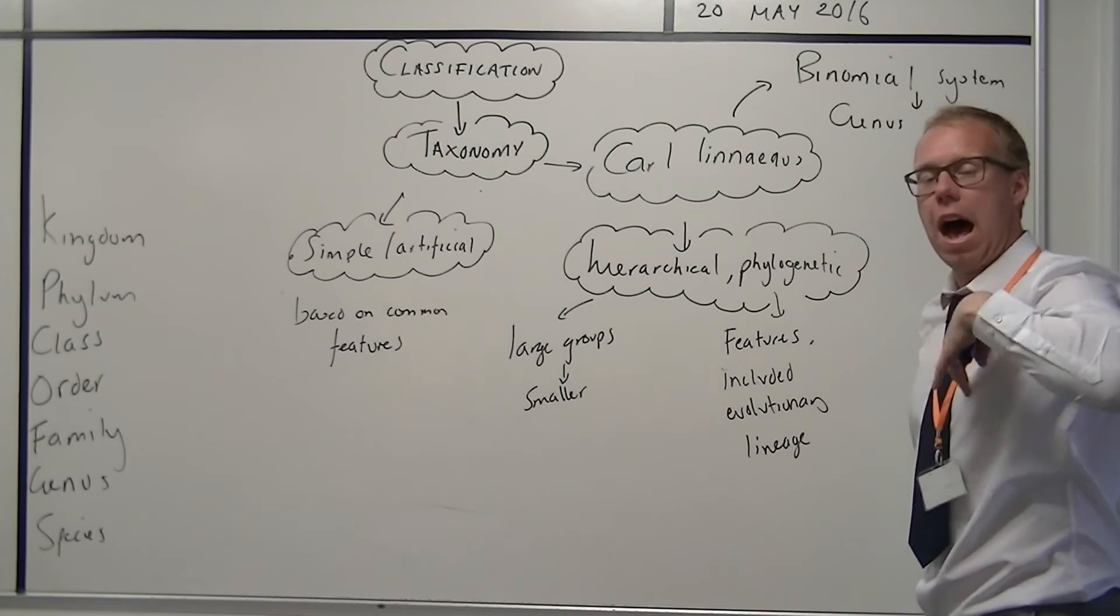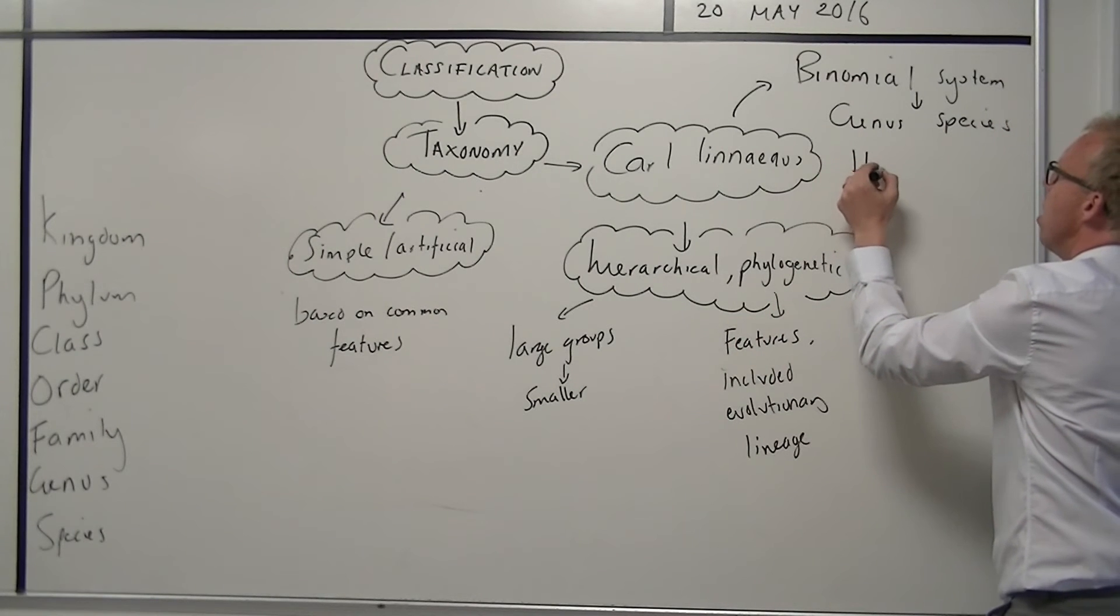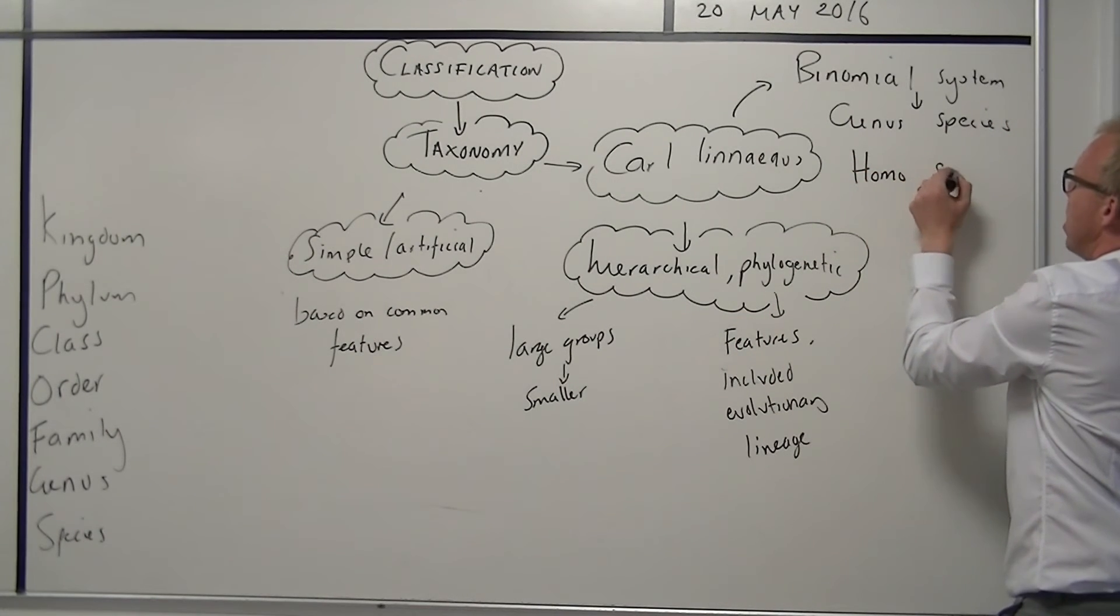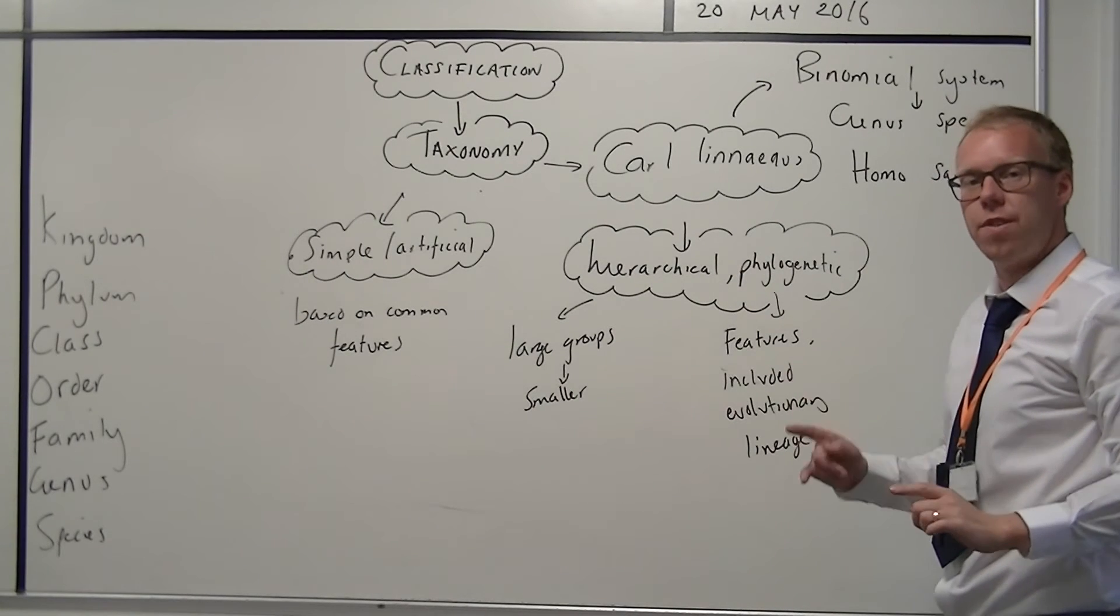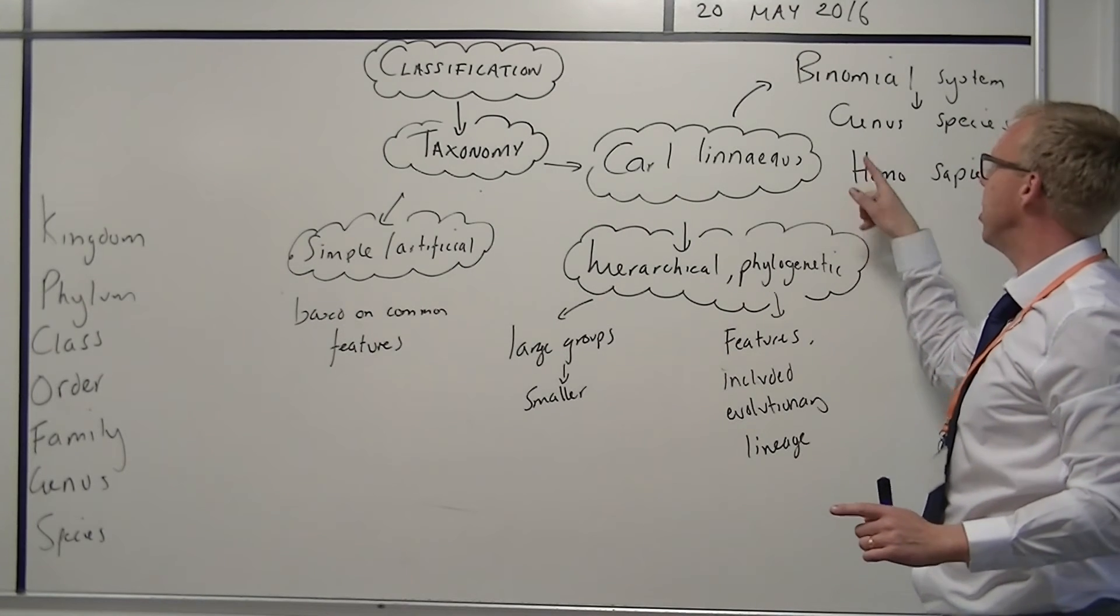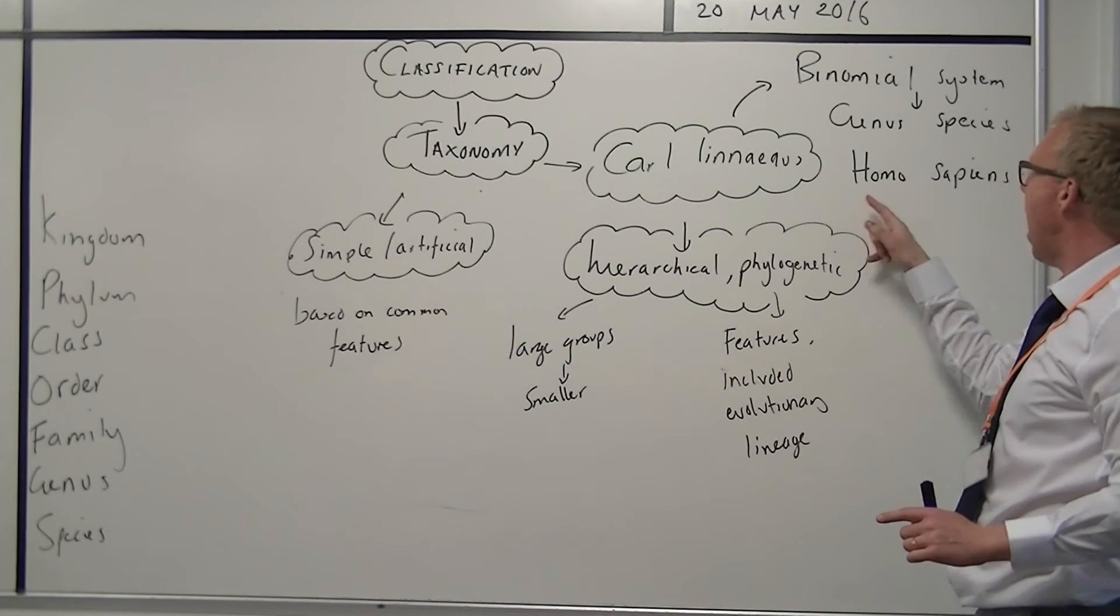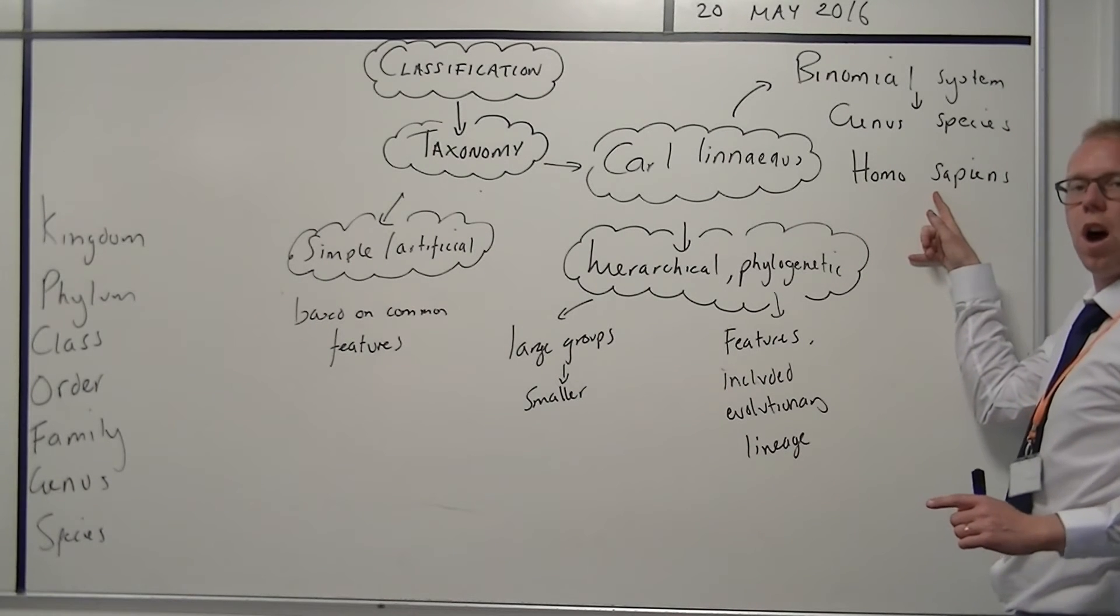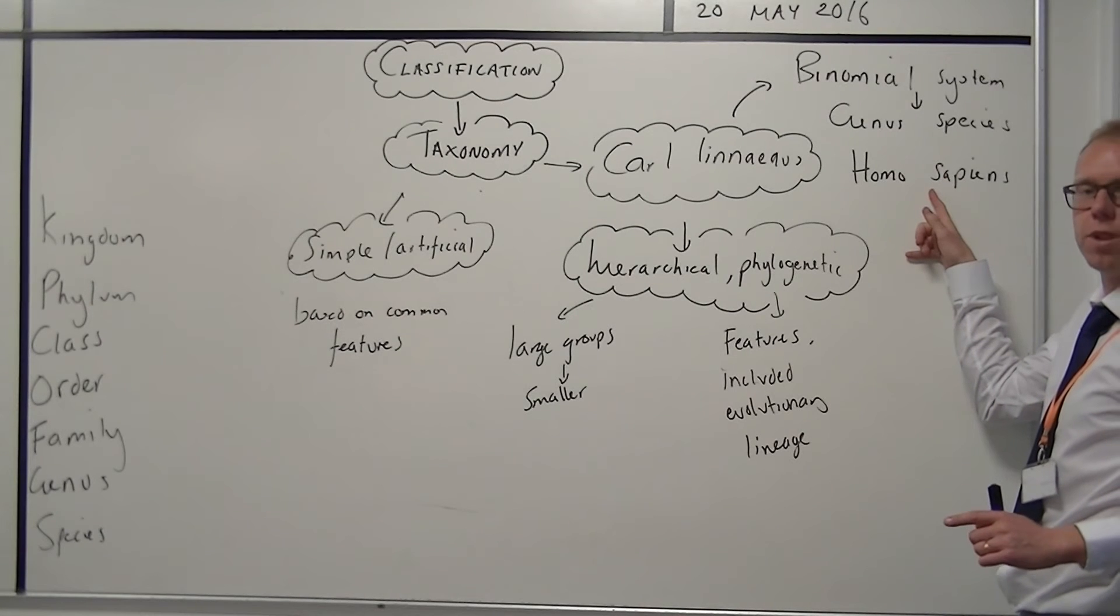For example, if I was to give our binomial name as humans, we are Homo sapiens, it's not sapiens depending on how you pronounce it. Now, first of all, I want you to notice that the first letter, the first word is a capital. The genus always starts with a capital, like the capital H in Homo, and the second word has a small letter, as in a small S in sapiens.